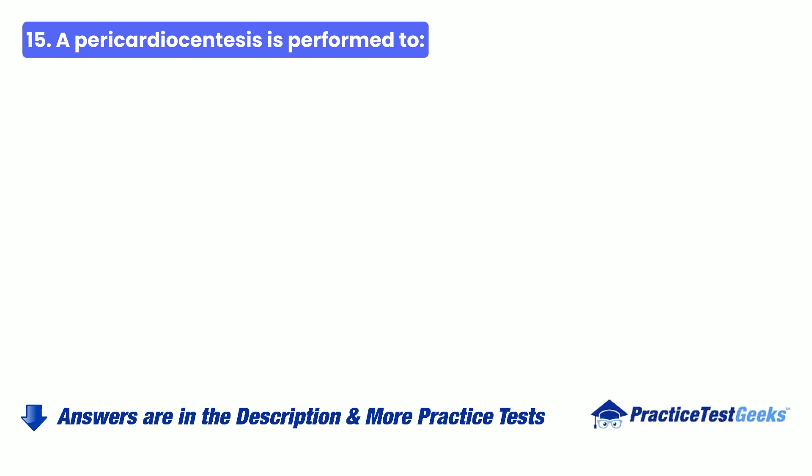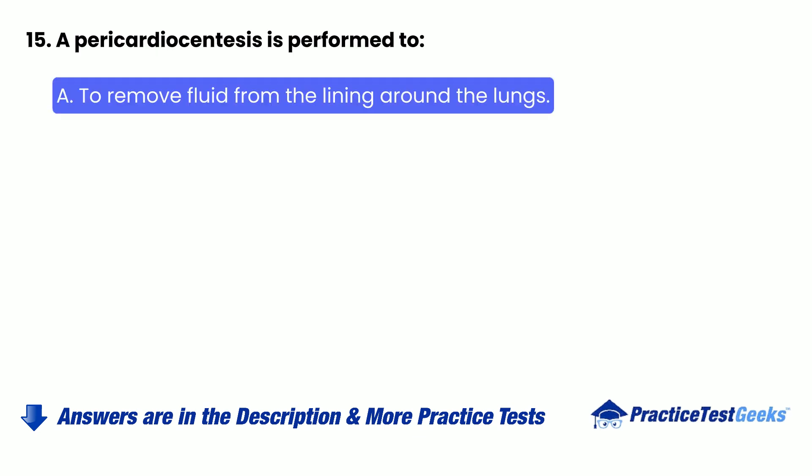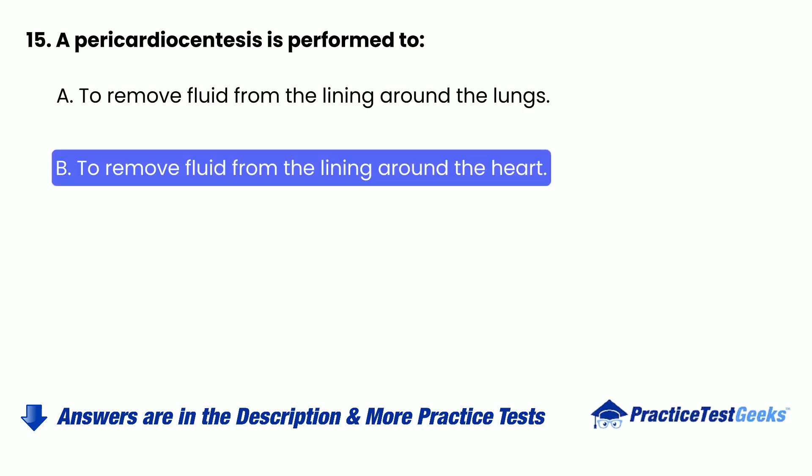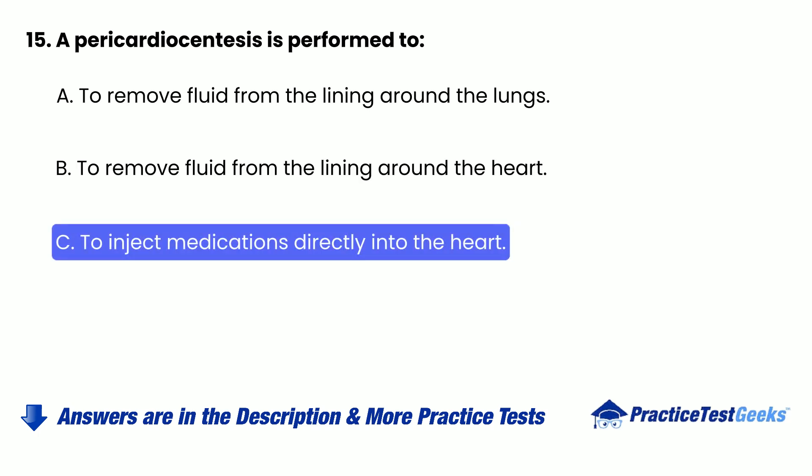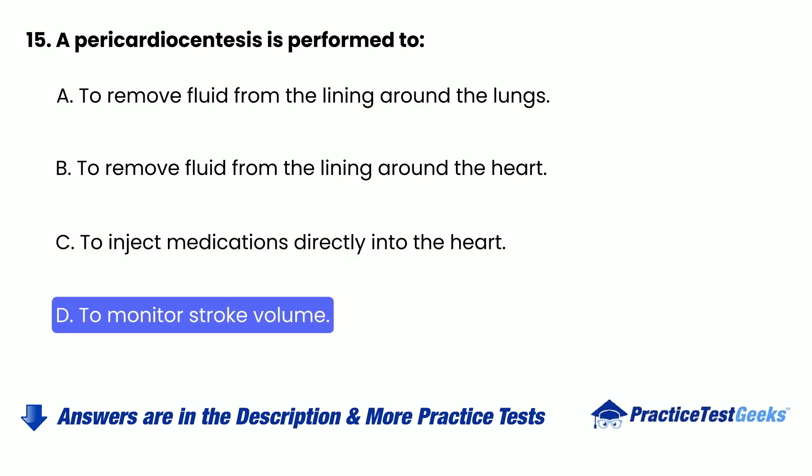Question 15: A pericardiocentesis is performed to: A. Remove fluid from the lining around the lungs. B. Remove fluid from the lining around the heart. C. Inject medications directly into the heart. D. Monitor stroke volume.